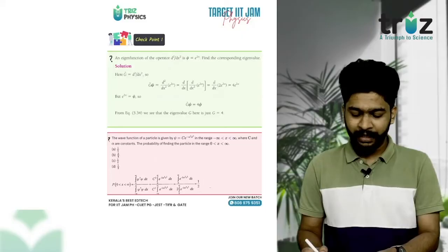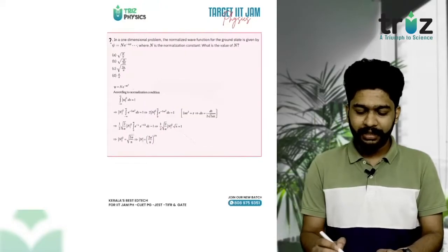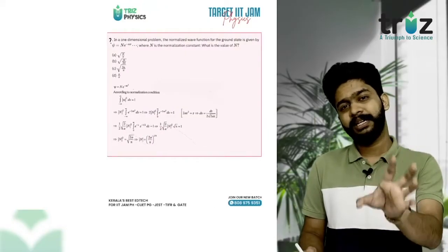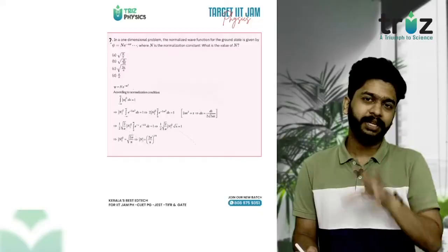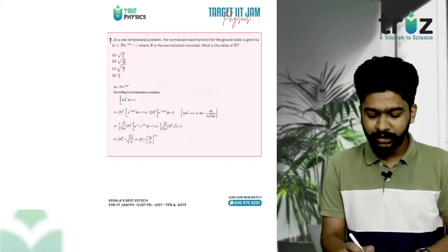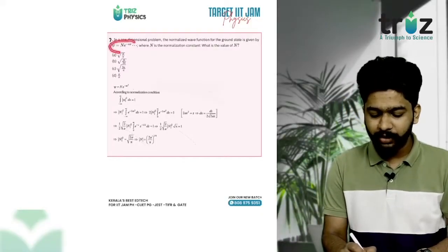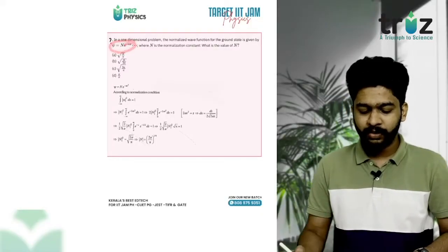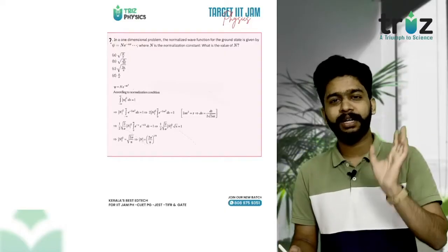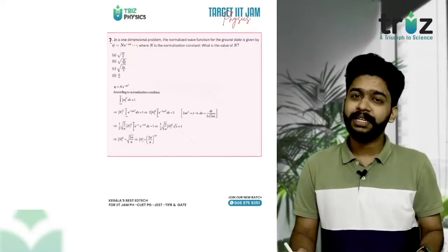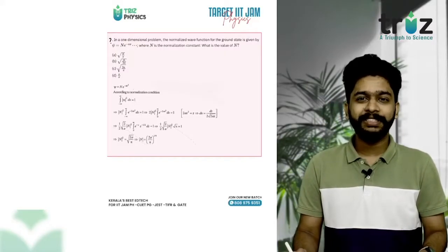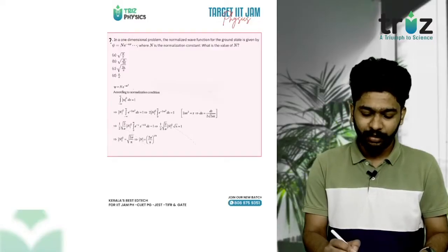This is the normalization condition. The normalization constant is found by integrating: the integral of |ψ|² dx equals 1.